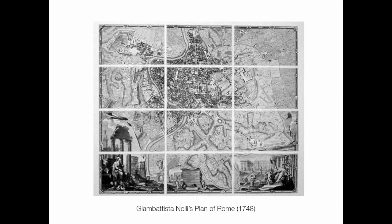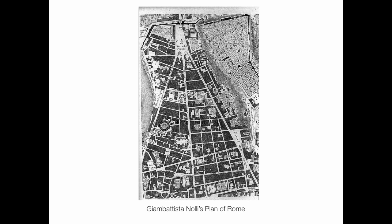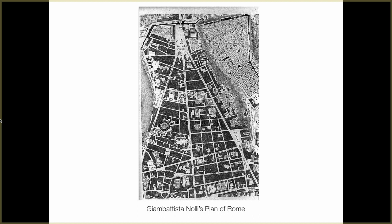If we go back in history to Giambattista Nolli's plan of Rome in 1748 — maybe you saw this in history class — this is a plan of Rome. Let me blow up a section because this version is too small to see detail. As we look at this plan of Rome, there are labels, we can see Piazza del Popolo right up here, the streets and so on. But what do we see in terms of solid and void? There are white areas and black areas representing two different things.